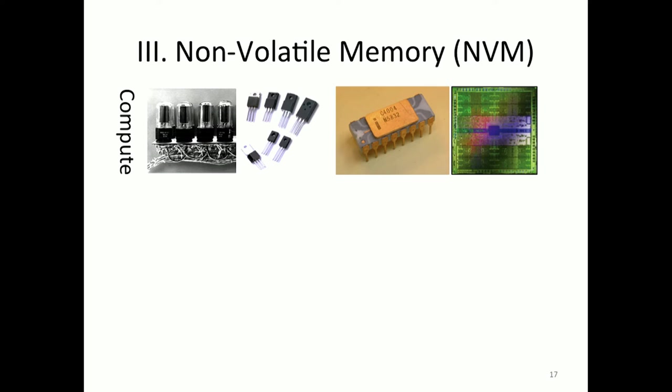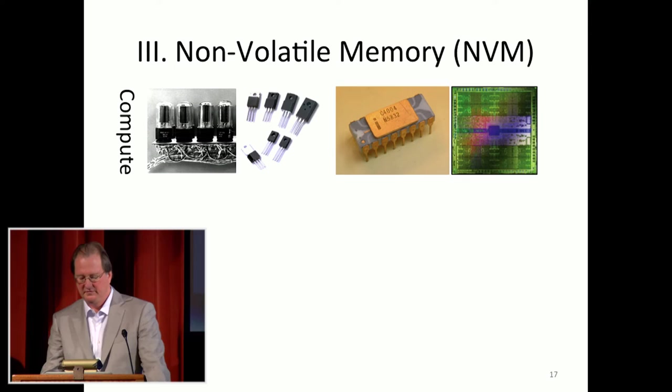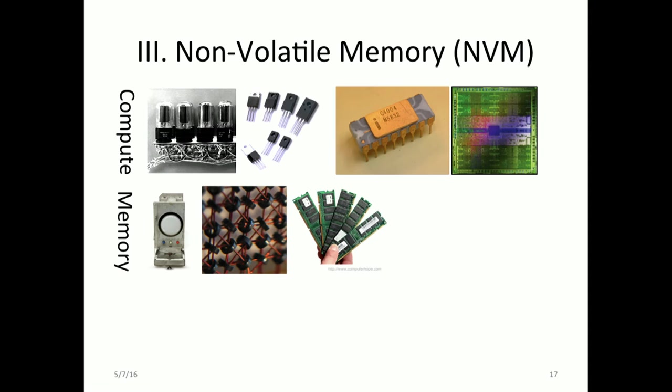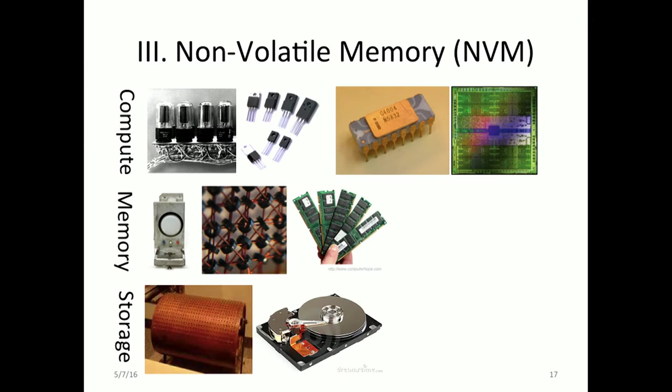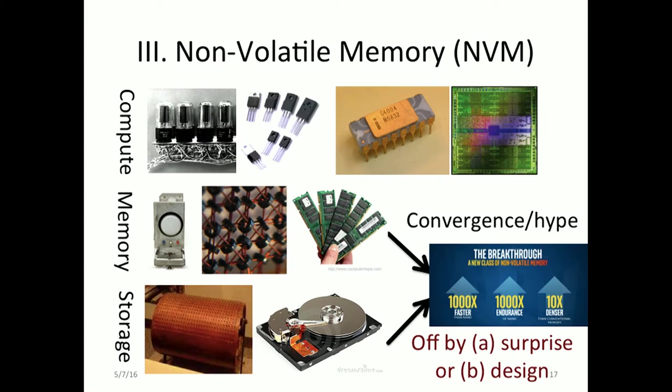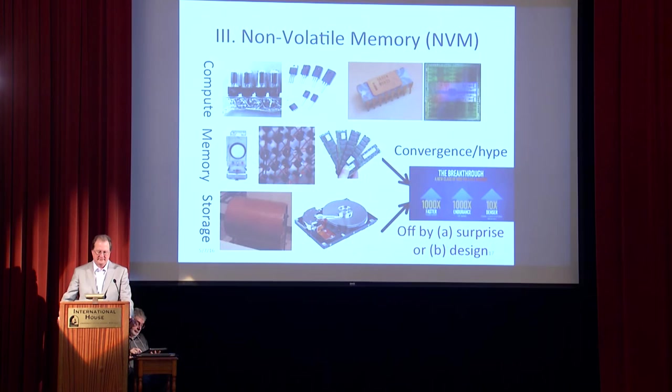The final thing: how is storage going to affect memory? Classically, a single box has had many technologies for compute — from vacuum tubes to discrete transistors to chips — many memory technologies from Williams tubes to core to DRAM, and storage technologies from drums to discs. Now we're at a very interesting point where people are proposing a convergence. These convergences start out with a tremendous amount of hype — it's going to be better, faster, stronger in every way — but eventually the truth will out. This convergence is going to have a big effect on the memory hierarchy, in my judgment.